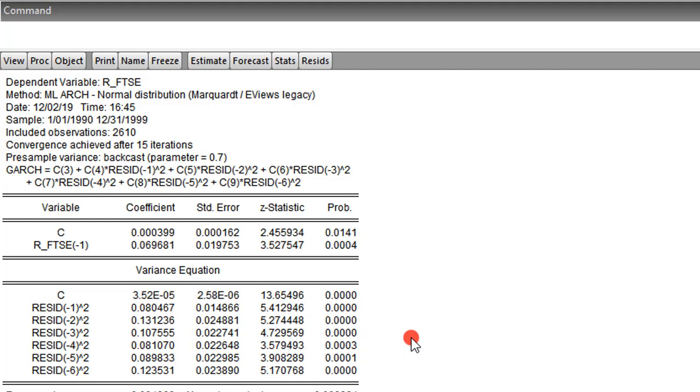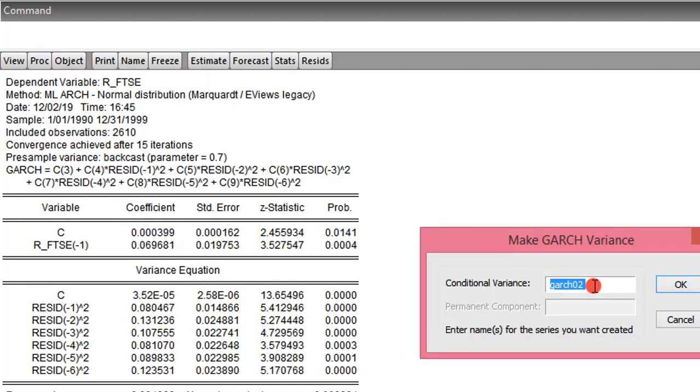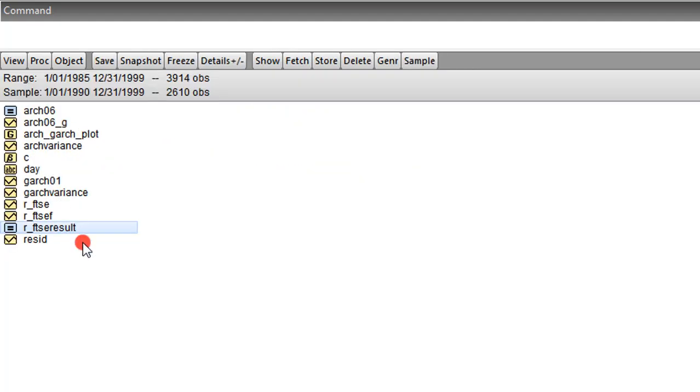So the next thing to do now is to plot the variance of this series. We go to PROC, click on Make GARCH Variance Series. So I name this ARCH Variance. I click OK. So this is the conditional variance for the ARCH model. So let's check our work file. From our work file now, we have ARCH Variance and we have the GARCH Variance. So we need to plot the two together for visualization.